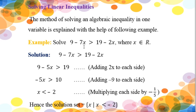Solve: 9 - 7x is greater than 19 - 2x, where x belongs to real numbers. How we will solve this one? Your left hand side should have all the variables involved in the inequality and your right hand side should have all the constants.